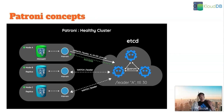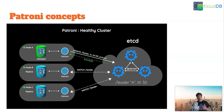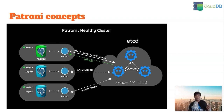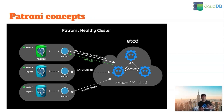In this case the primary is node A. Every 10 seconds — there is a variable called loop wait which is set to 10 seconds by default — the primary node updates the leader key. If the primary node fails to update the leader key, for example because it is down, once the TTL of 30 seconds hits, the leader key expires and the new leader election process kicks off. By default TTL is set to 30 seconds.